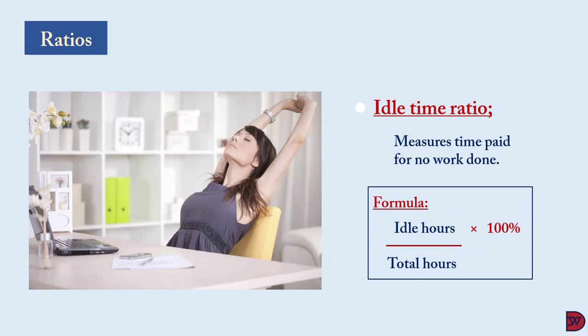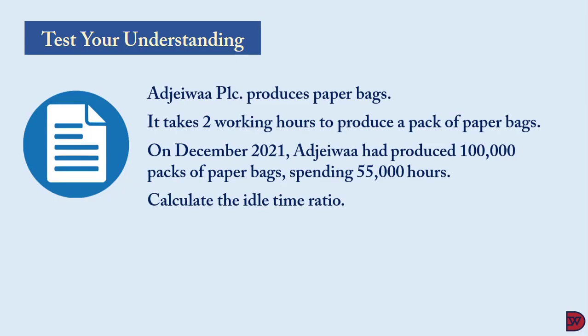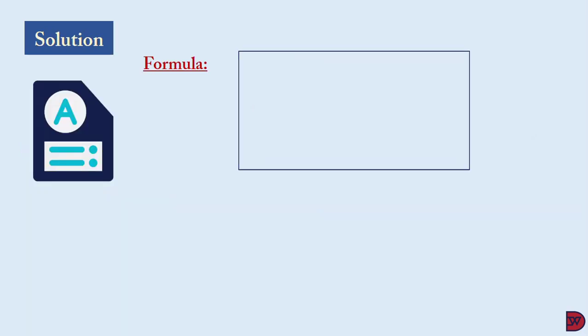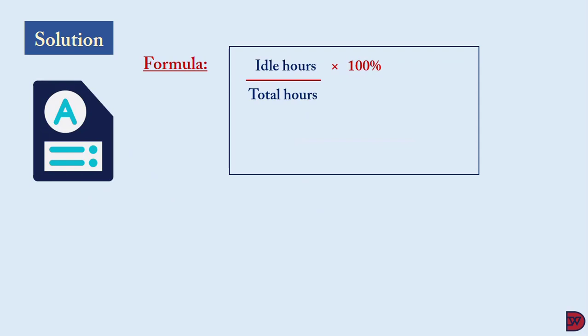The formula for idle time ratio is: idle hours divided by total hours available to the business, multiplied by 100. Let's test our understanding: Ajewa PLC produces paper bags. It takes two working hours to produce a pack. In December 2021, Ajewa produced 100,000 packs spending 205,000 hours. The idle time ratio is 5,000 idle hours divided by 205,000 total hours, multiplied by 100, which gives 2.44 percent.